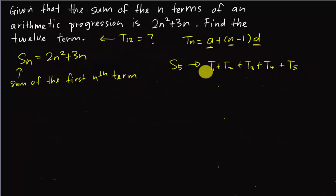So in order to get T12, what I will do is use sum of the 12th term minus sum of the 11th term. Then I can straight away get the 12th term, correct or not?